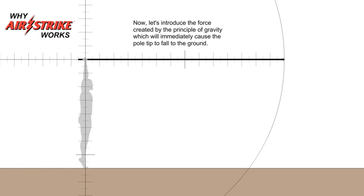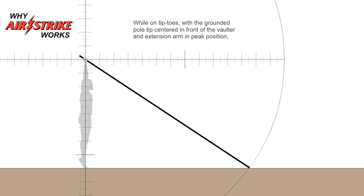Now let's introduce the force created by the principle of gravity which will immediately cause the pole tip to fall to the ground. While on tiptoes with the grounded pole tip centered in front of the vaulter and the extension arm in peak position,